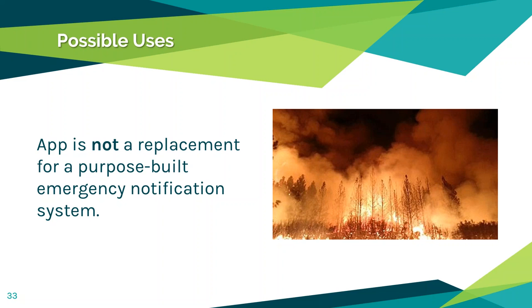Town Crier is not meant to be a replacement for a purpose-built emergency notification system. There are very robust systems in place for emergency notification — for events like tsunamis or wildfires — and those are purpose-built for that reason. Our app is non-emergency only, but it does have an important purpose for routine civic communication.